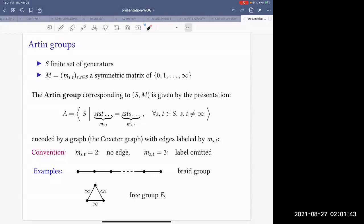It has a set of generators S, and for each pair of generators, there is an Artin relator of this form. We have ST, ST, ST that many times, which is the number in the matrix. If M_ST is 2, that's just the usual commutativity relation. If M_ST is 3, we have a classical braid relation. But for bigger M_ST, we have something longer. These are relations of Artin groups.